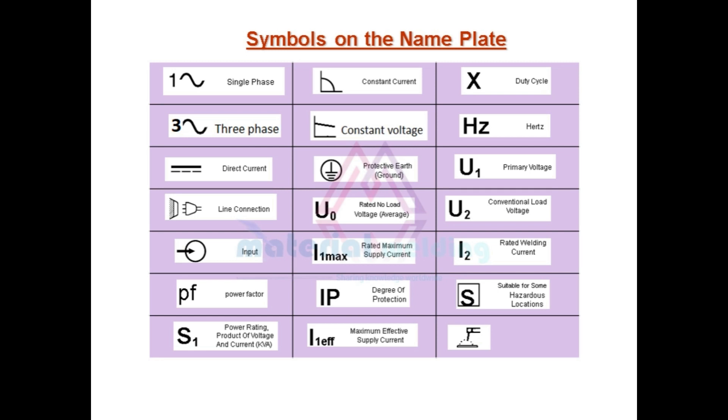Sometimes a power source, as we know like inverter type, they can be used for multiprocess. So this symbol shows such a power source type example. So let's try to read a nameplate.